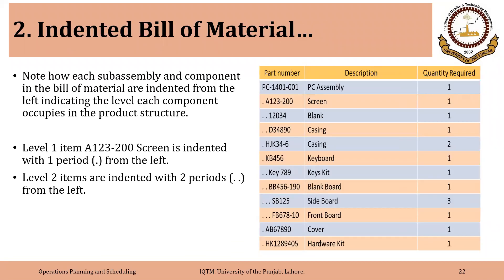To reemphasize: each sub-assembly and component in the bill of material is indented from the left, indicating the level each component occupies in the product structure. Level one item A123200 — screen — is indented with one period from the left. Level two items are indented with two periods from the left, and so on. There is alphanumeric coding used, and each code is unique. This is the indented bill of material, which is more commonly used in practice.